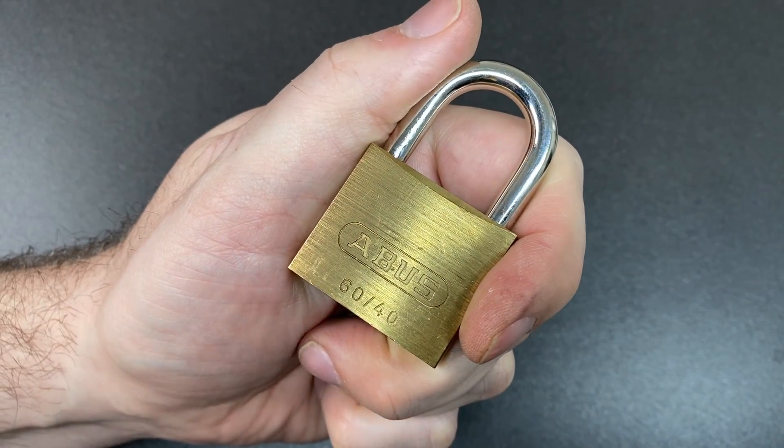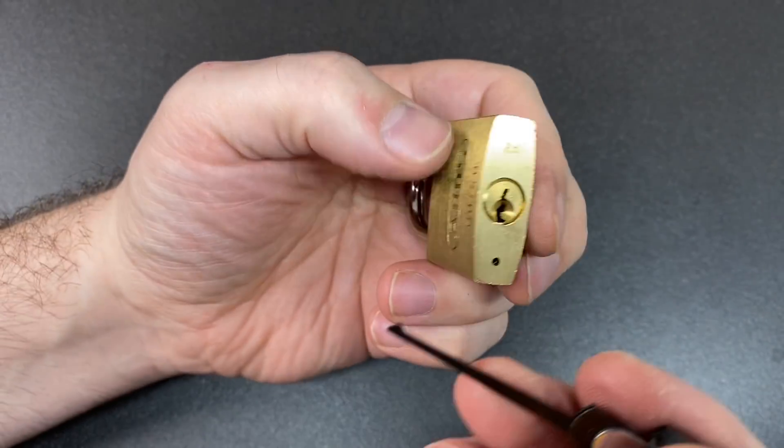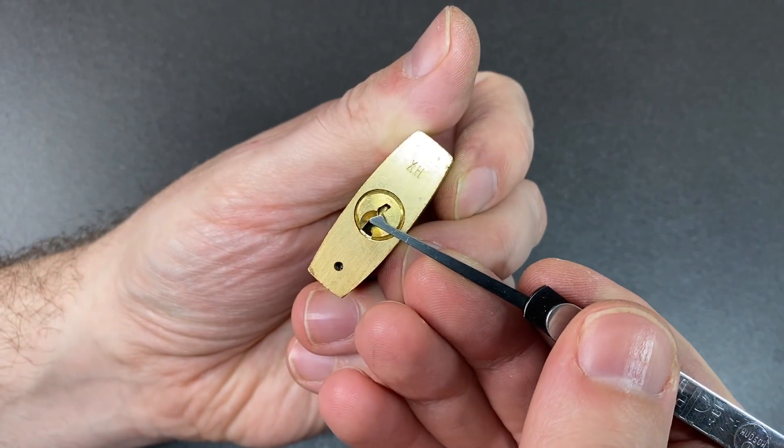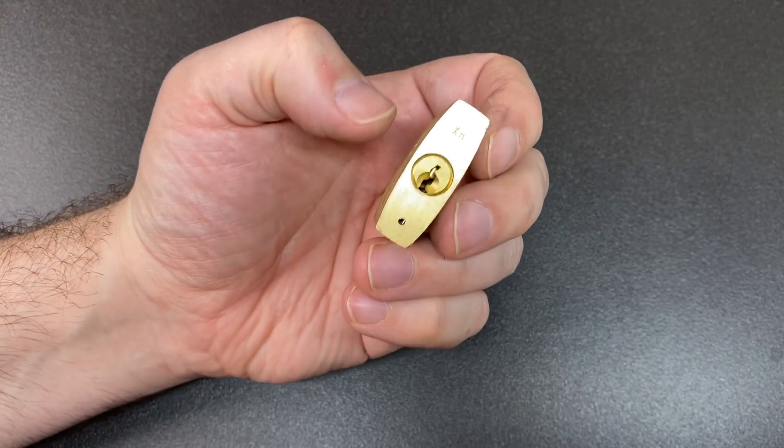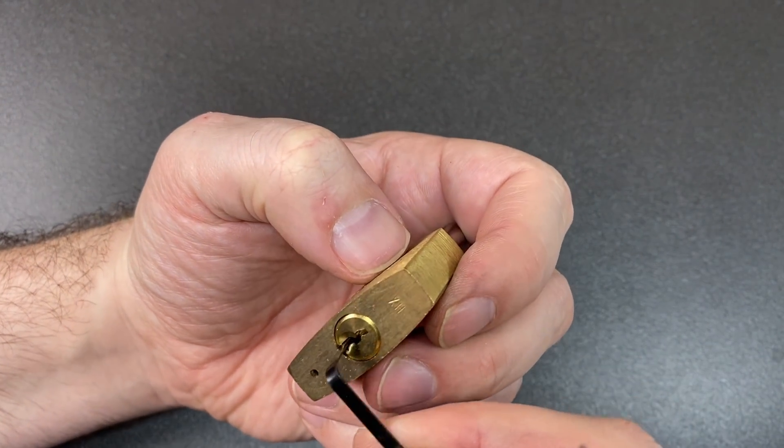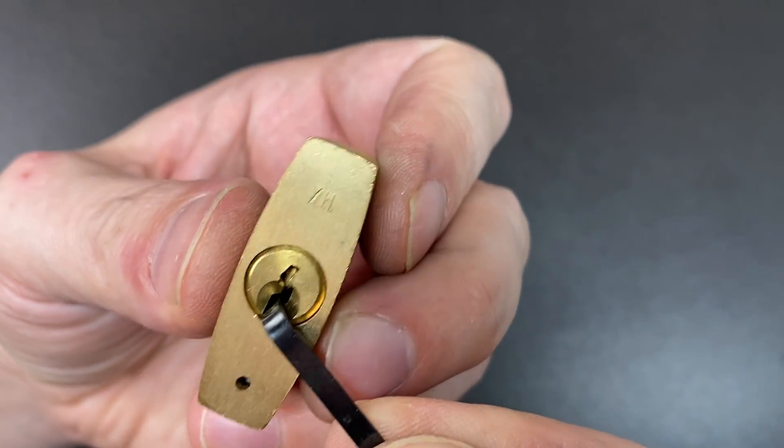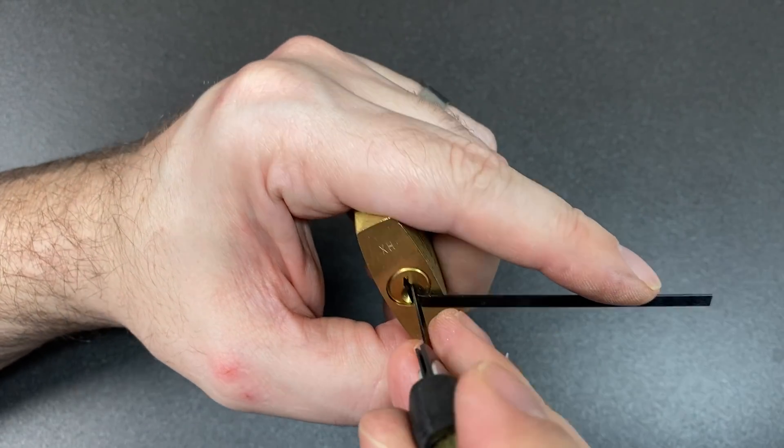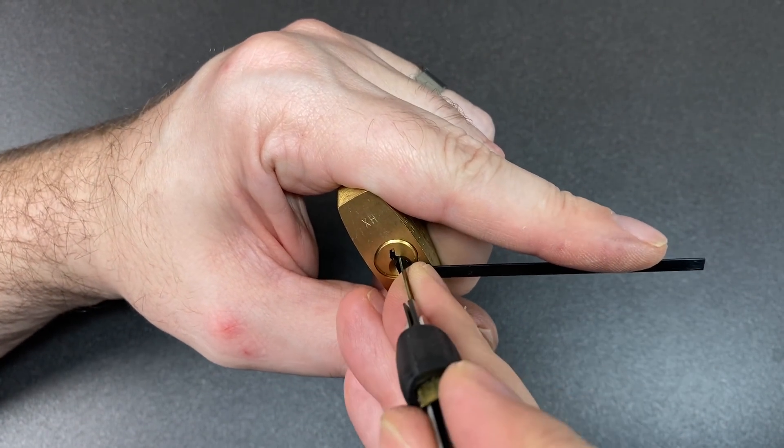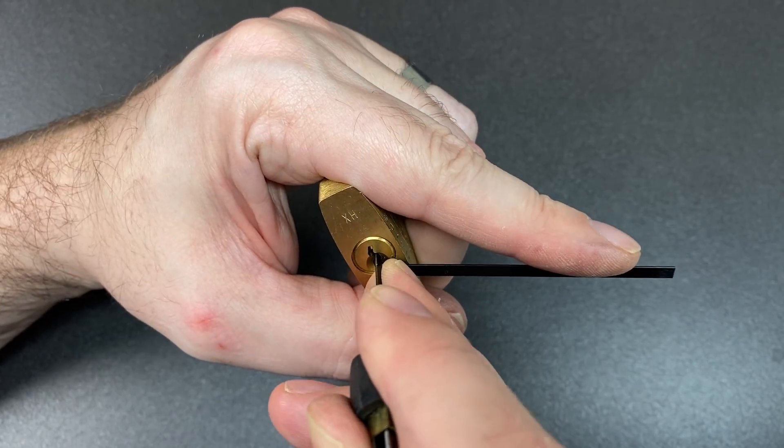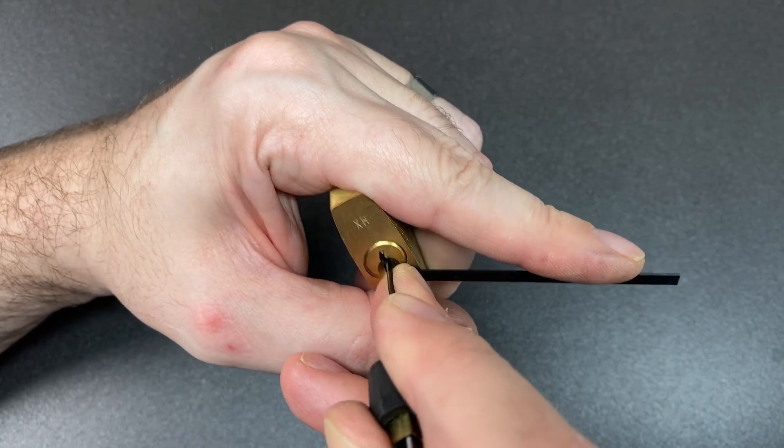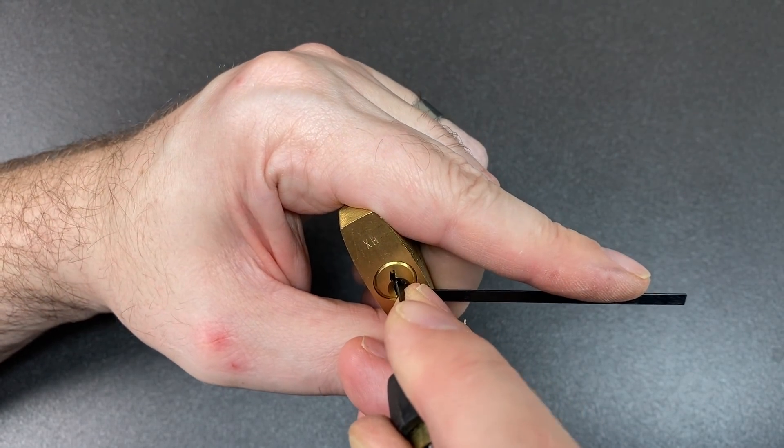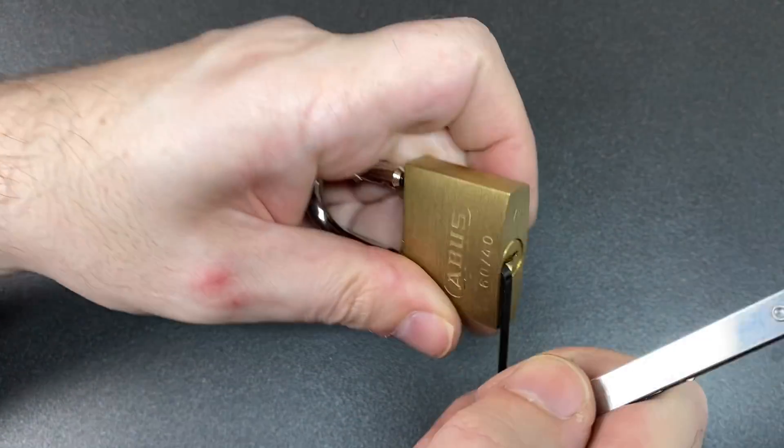This is quite a small 40 millimeter padlock with a small keyway, and the hook is just too deep to get in there. But I might try to see whether I can use this half diamond as a short hook—it can work. The tension tool is just a little bit big for this keyway, so that might limit the amount of room we have for this pick as well. But let's give it a go. Five pins and lots of spools. Anything that feels like it might lift up... there we go, and we did get it.